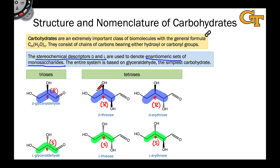The key point in general is that it's the stereocenter closest to the CH₂OH group — or at the bottom of the Fischer projection — that is the determining factor for D or L.